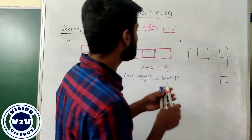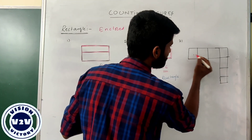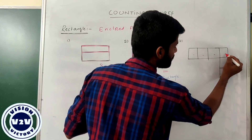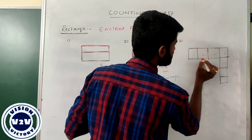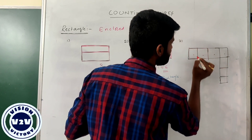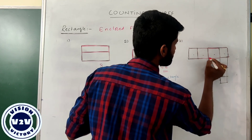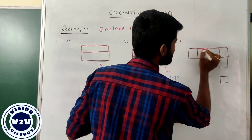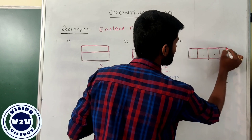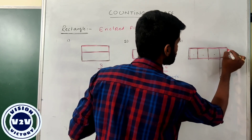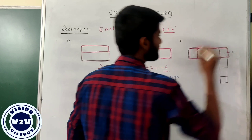Count the total number of rectangles in this figure. Here: one, two, three, four. Then moving on: this is the fifth, this is the sixth, this is the seventh, this is the eighth, this is the ninth. The entire box we can define as 10 rectangles.